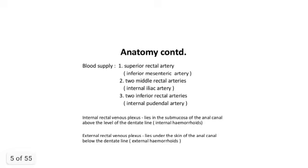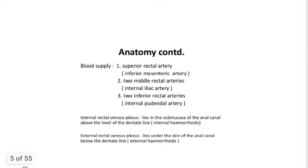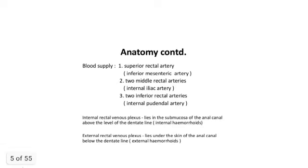The blood supply is by the superior rectal artery, which is a branch of the inferior mesenteric artery, the middle rectal arteries from the internal iliac, and the inferior rectal arteries, which are branches of the internal pudendal artery. The internal rectal venous plexus lies in the submucosa of the anal canal above the level of the dentate line and forms the internal hemorrhoids. The external rectal vein lies under the skin of the anal canal below the dentate line and causes external hemorrhoids.